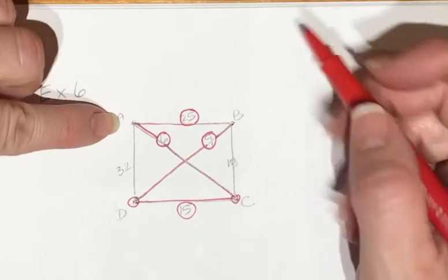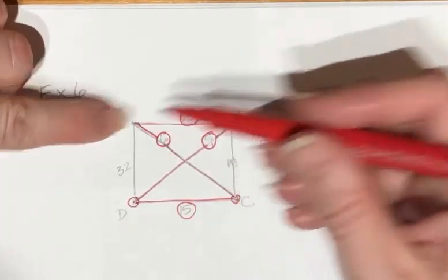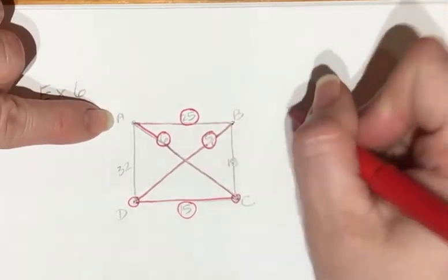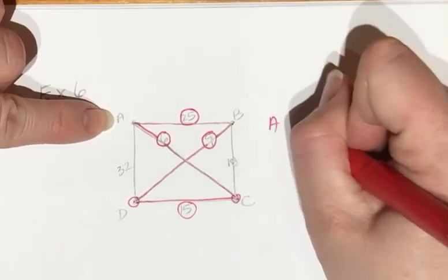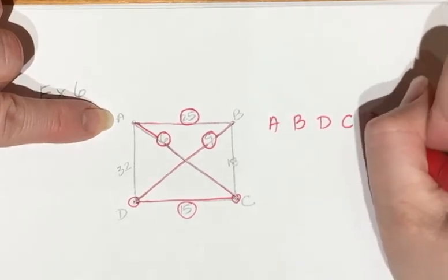Starting with A, it wouldn't matter if you did A, B, D, C or A, C, D, B, A. You could go either direction. I'm going to say A, B, D, C, A.